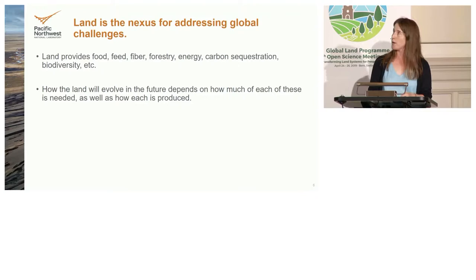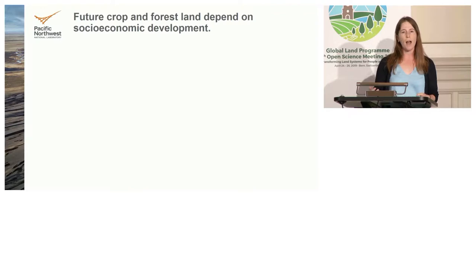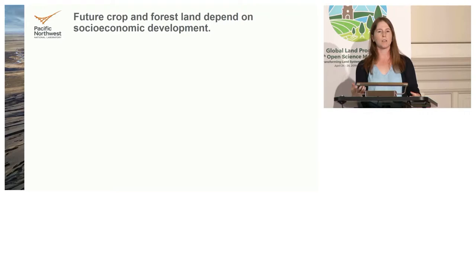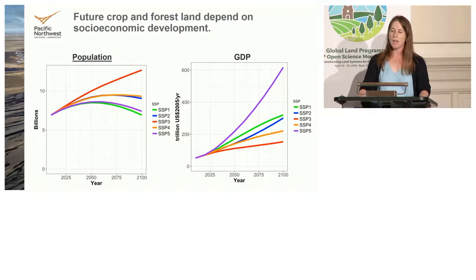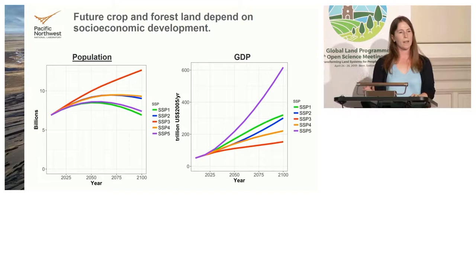The roughly 25 scenarios published in 2017, all from one model, are based on what are called the Shared Socioeconomic Pathways — different stories for how the planet might evolve. How socioeconomic development evolves will influence land use and land cover. There are five different stories; you can pair them with different temperature targets to get different pathways. These stories are all plausible but reflect uncertainties in what we know about what will happen.